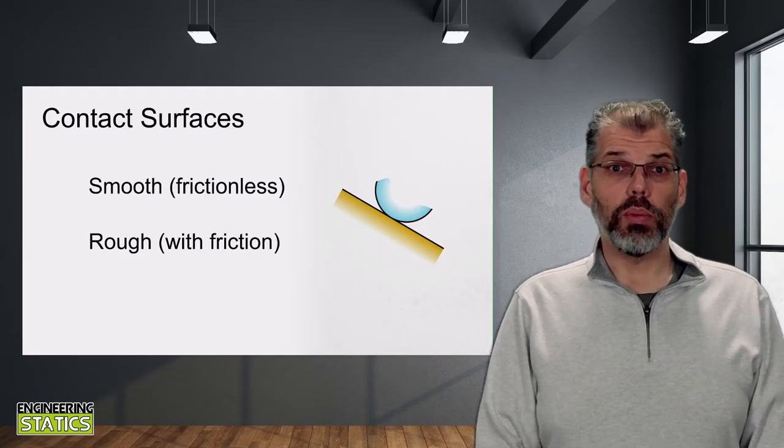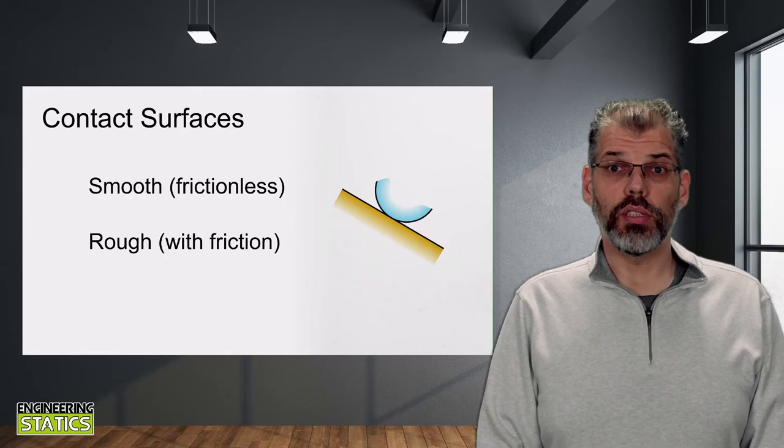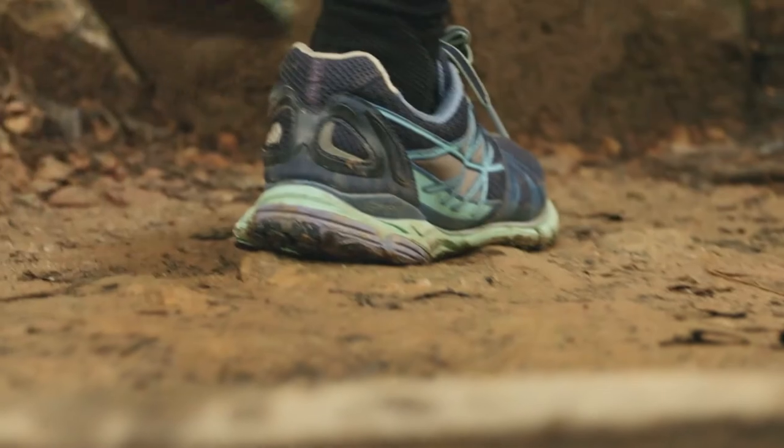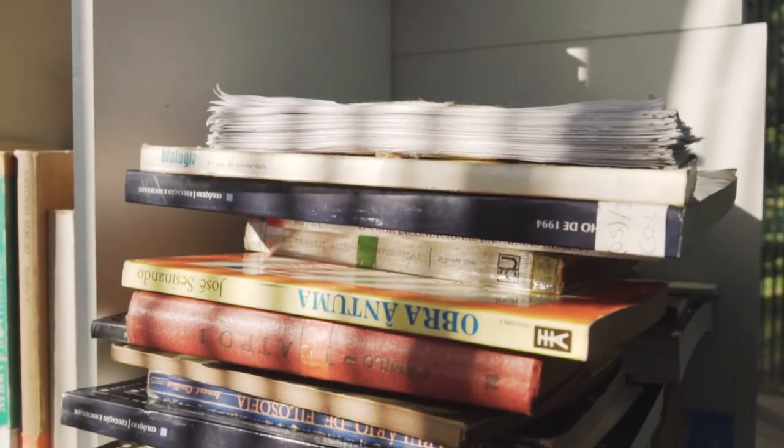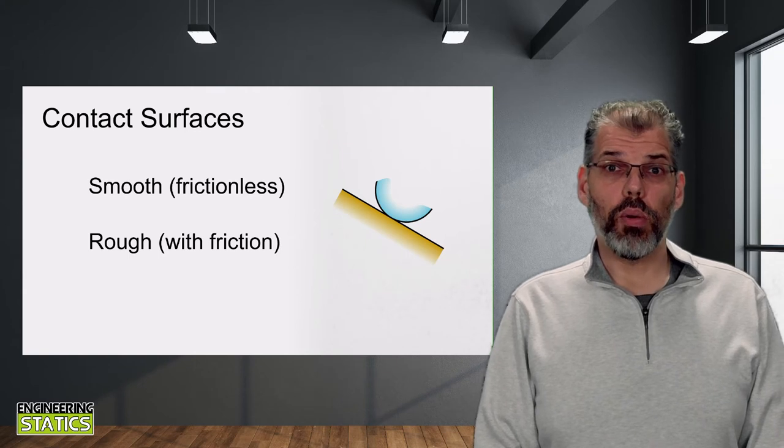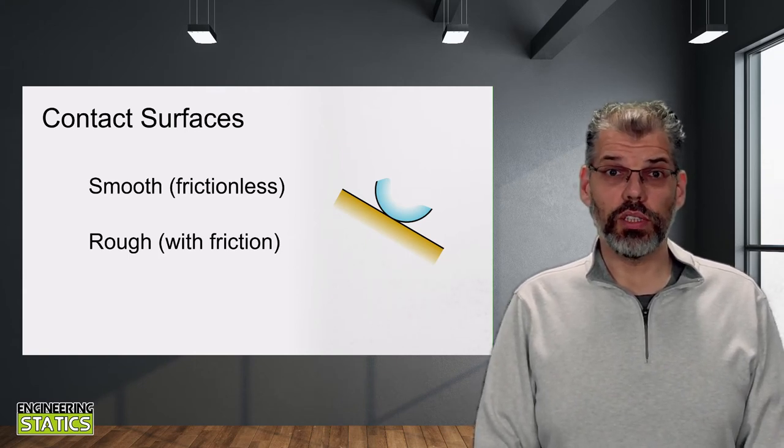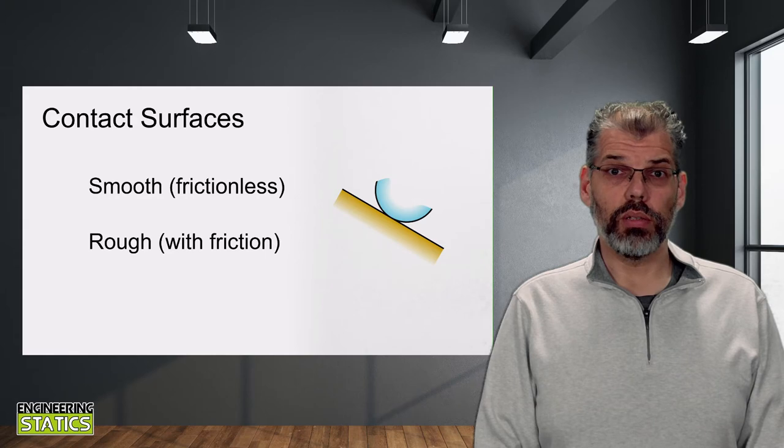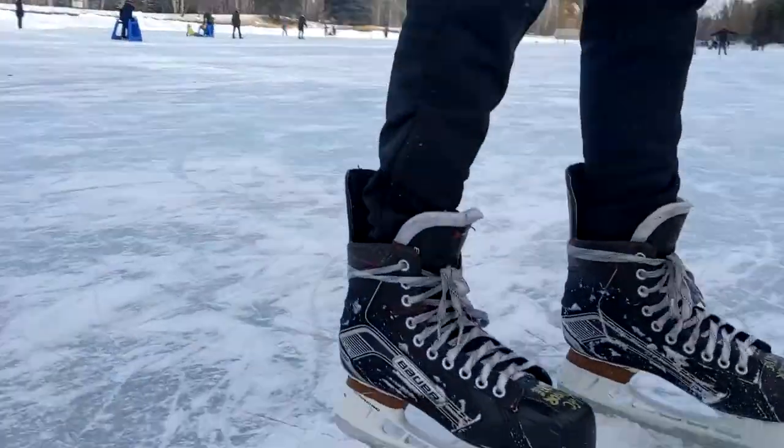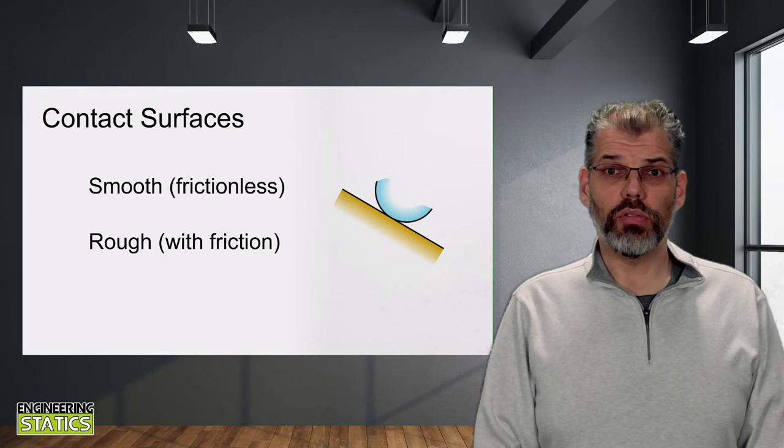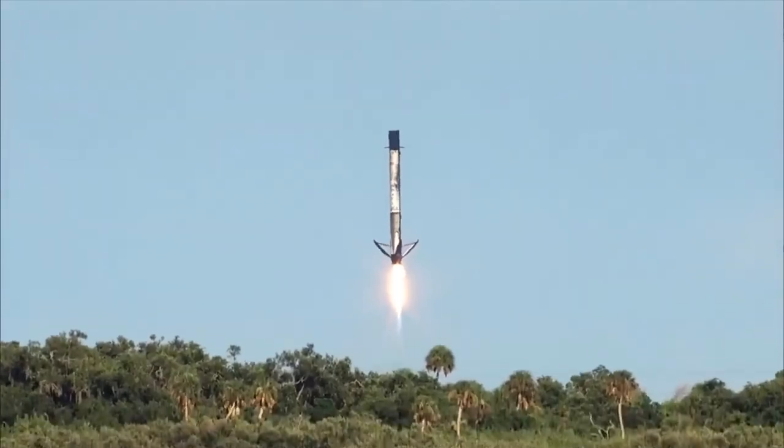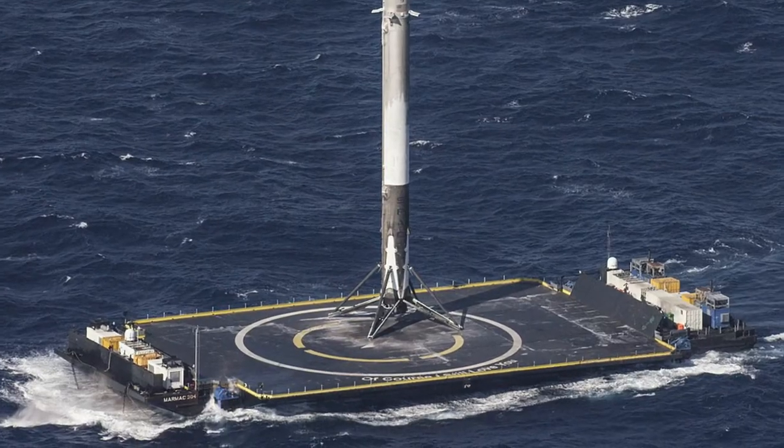The first type of support we will look at are contact surfaces. A contact surface refers to two objects that are simply in contact with each other, but not otherwise joined or connected. We tend to further subcategorize contact surfaces as smooth contact surfaces with negligible friction, such as an ice skate gliding on a sheet of ice, or as rough contact surfaces, where non-negligible friction forces can develop, such as in the landing struts of the SpaceX Falcon 9 rocket.